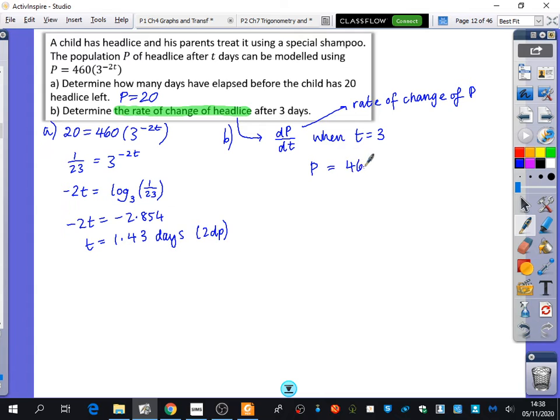We want to find out what is dp dt when t equals three. So, we have that p is 460 multiplied by three to the power of minus two t. And I'm going to differentiate it to find dp dt. What's that going to differentiate to? Minus two from the power. Ln3 from this. And the 460, don't forget the 460. All of that multiplied by 460 and multiplied by three to the power of minus two t. That is the rate of change of the head lice on this child's head.